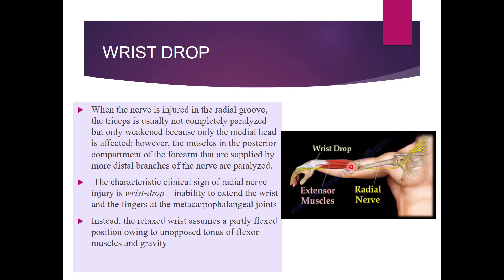When the radial nerve is injured in the spiral groove, muscles of the posterior compartment of the forearm supplied by the most distal branches will be paralyzed. The medial head of triceps will be paralyzed along with those distal muscles. The characteristic clinical sign of radial nerve injury is wrist drop — the inability to extend the wrist and fingers at the metacarpophalangeal joint — because the radial nerve supplies most extensors of the forearm and fingers.